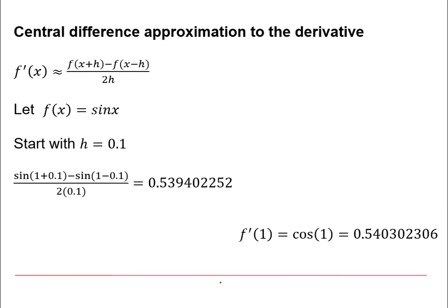We can see what happens if we use f of x equals sine x again. With the same value of h of 0.1, we get a value of 0.53940 to 5 decimal places, and that's a lot closer to cos of 1 than we had previously with the forward difference method.